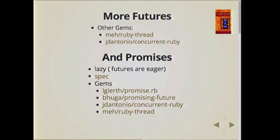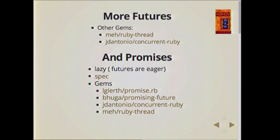There are also promises, which are like siblings of futures. The only difference is futures are eager — when you create one, it goes off on a different thread and starts working immediately. Whereas promises rely on a different thread to deliver the operation. But otherwise, semantically they're the same.